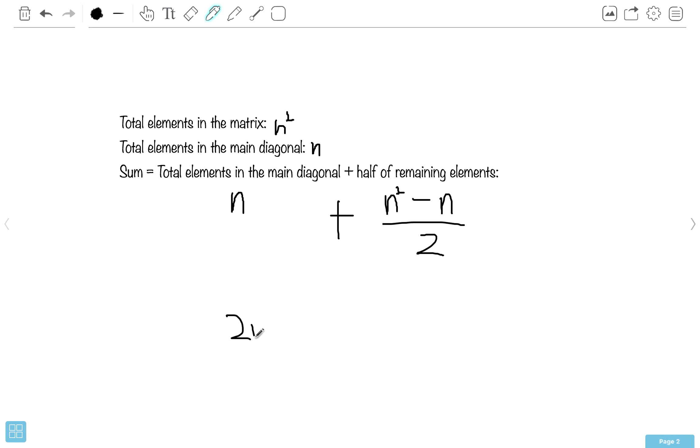Over 2, which is equal to n times, n squared plus n over 2, which is equal to n times n squared plus n.